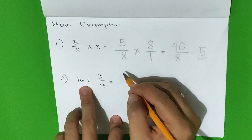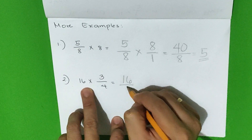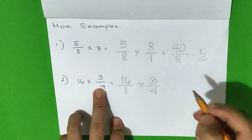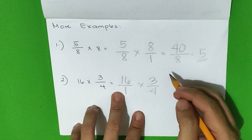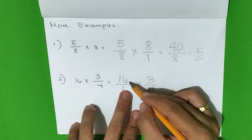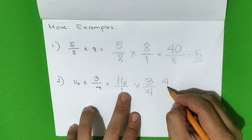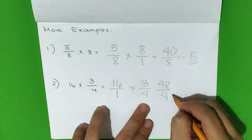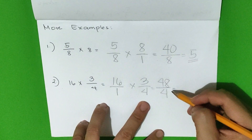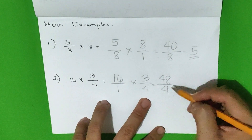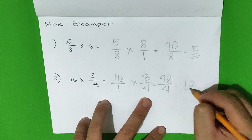The second example is 16 times 3/4. First step is to rename the whole number 16 with a denominator of 1, then multiply by 3/4. The second step is to multiply the numerators and multiply the denominators. 16 times 3 is equal to 48. And 1 times 4 is equal to 4. Since our product can still be reduced to lowest terms, let us divide 48 by 4. 48 divided by 4 is equal to 12.